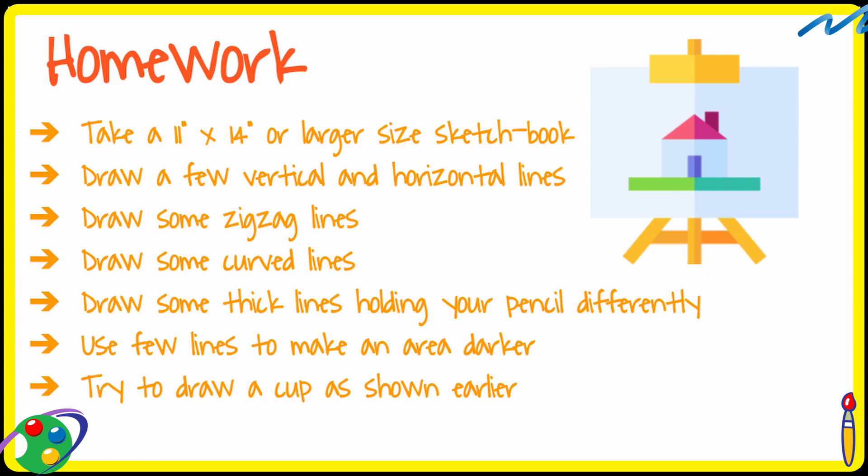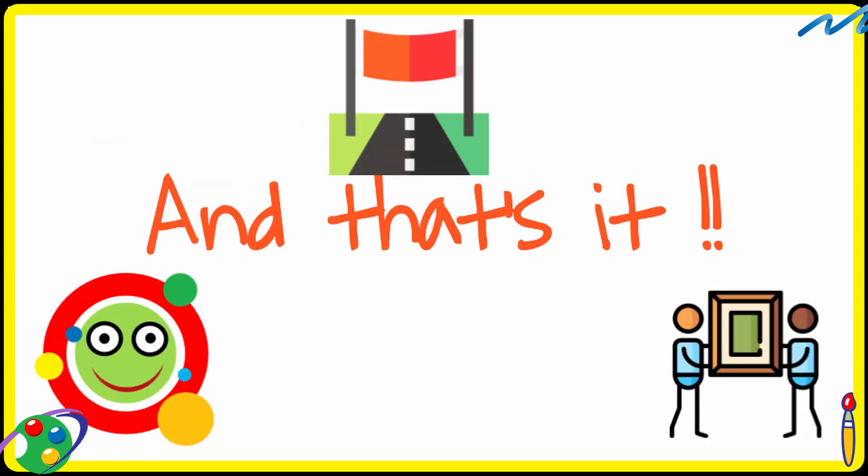With an HB pencil, draw a few, I would say, around 50 to 60 vertical and horizontal lines. Draw some zigzag lines. Draw some curved lines. Draw some thick lines holding the pencil the way I was holding. Use a few lines to make an area darker. And try to draw the cup as shown earlier. And that's it. I will see you in the next video.